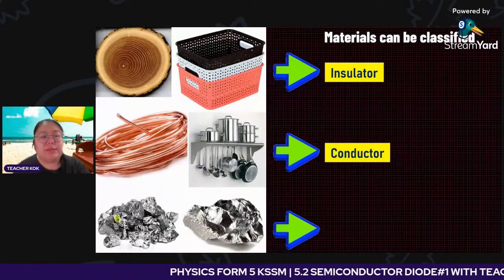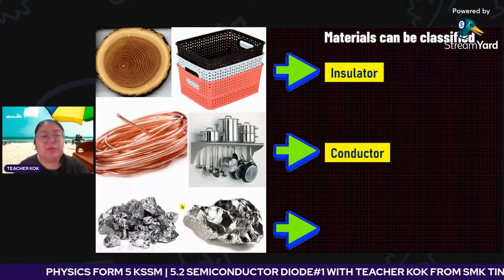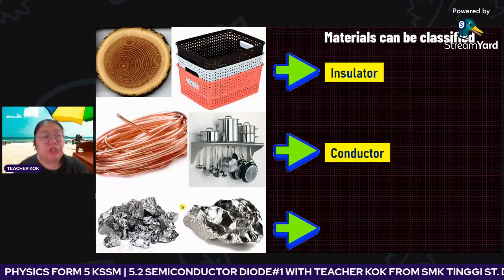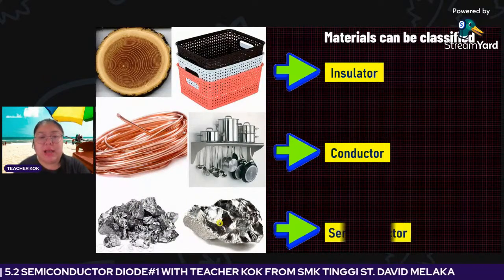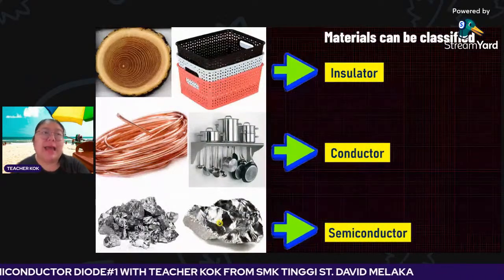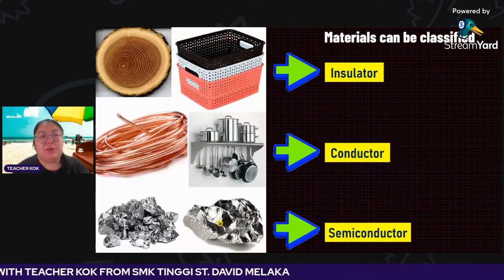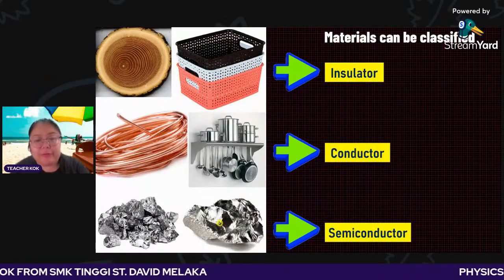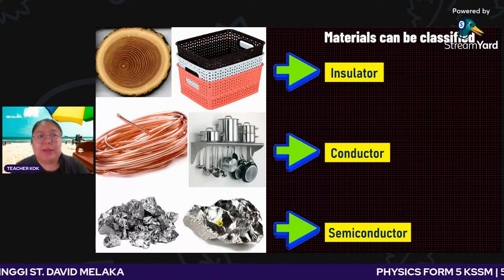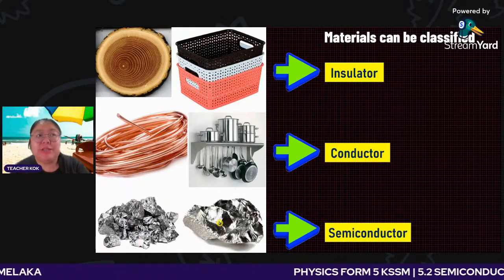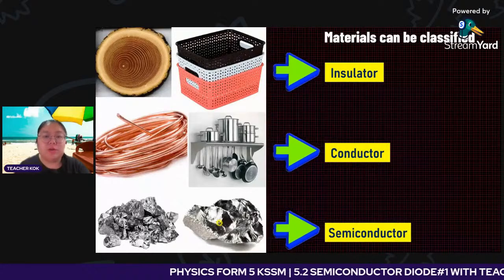Number three, you can see this one — just like stone. This one is called germanium and silicon. This one is under semiconductor. You can see the word 'semi' — semi means half. They can conduct, but only in a special situation. They can conduct electricity.